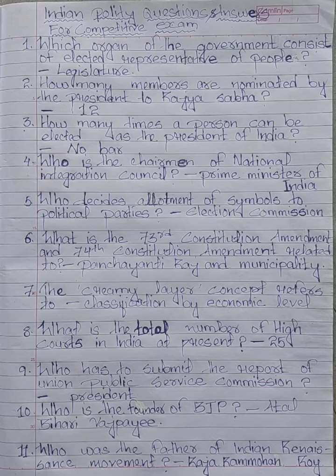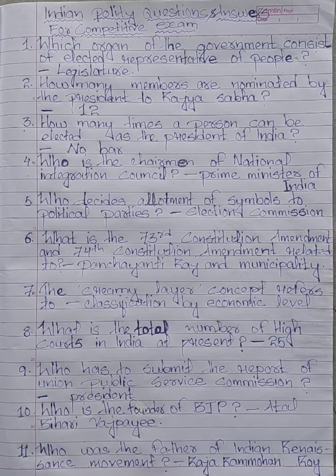There is no bar — a person can be elected any number of times. Who is the chairman of the National Integration Council? The Prime Minister of India. Who decides the allotment of symbols to political parties? The Election Commission. What are the 73rd and 74th Constitutional Amendments related to?